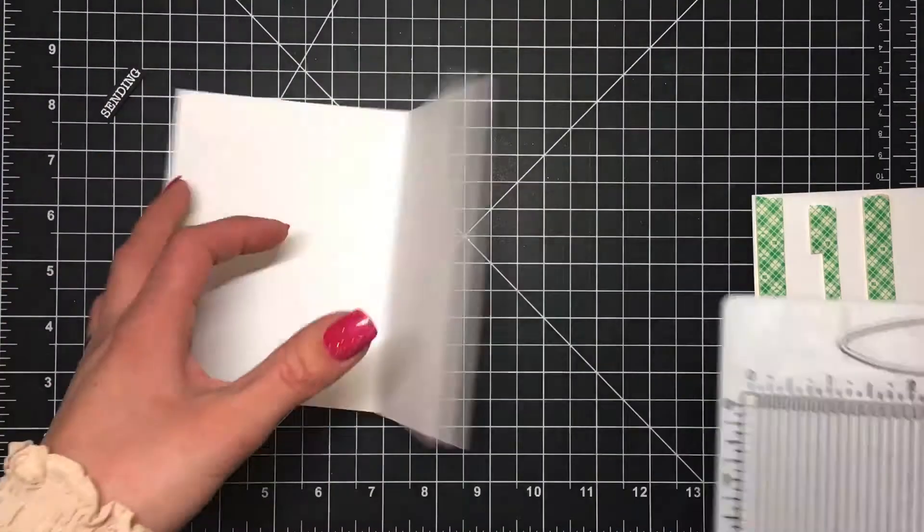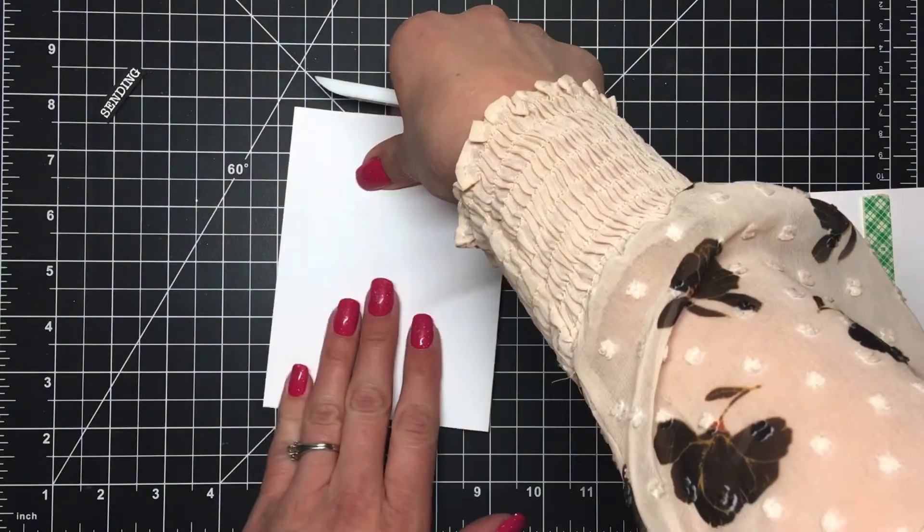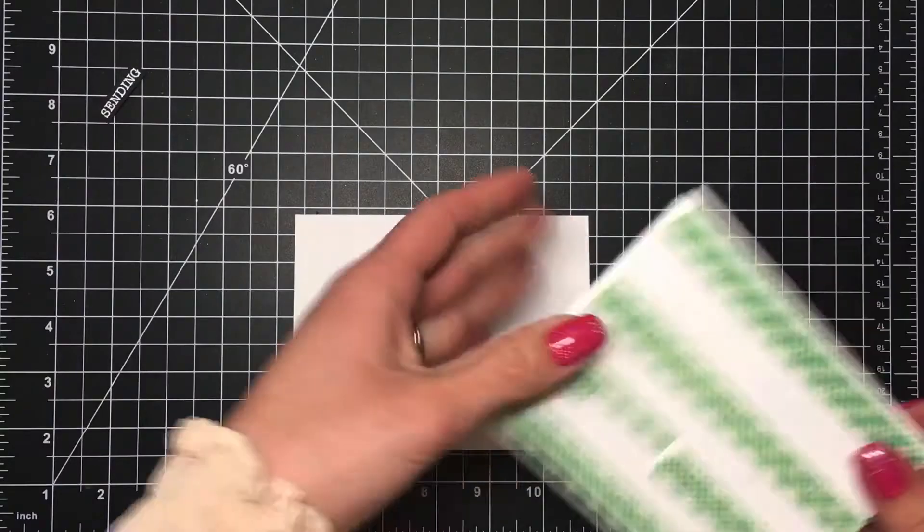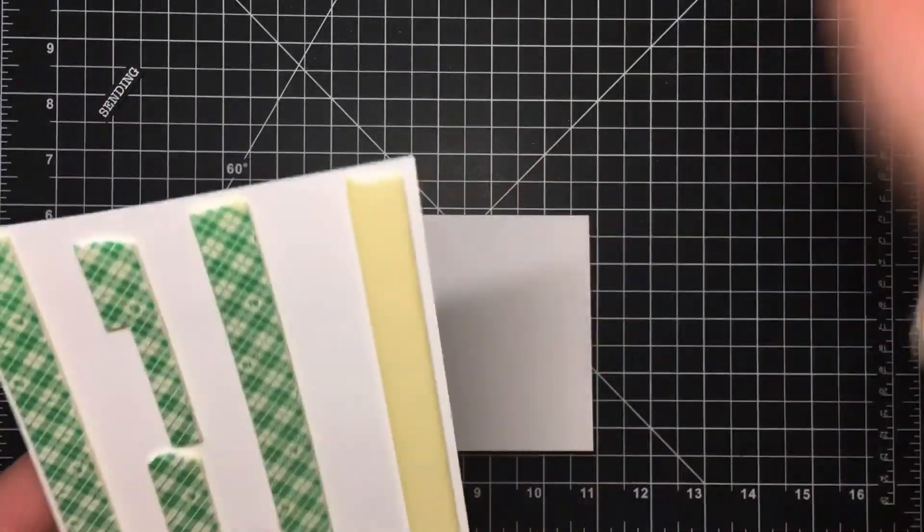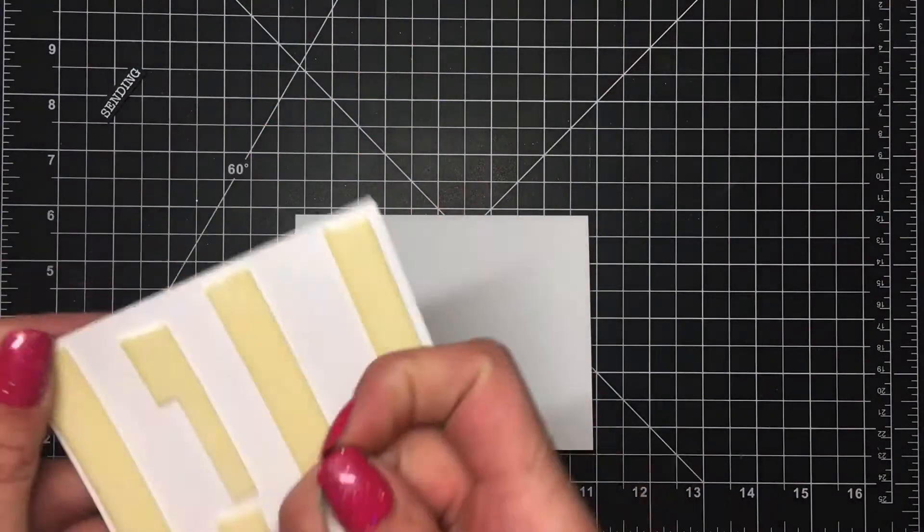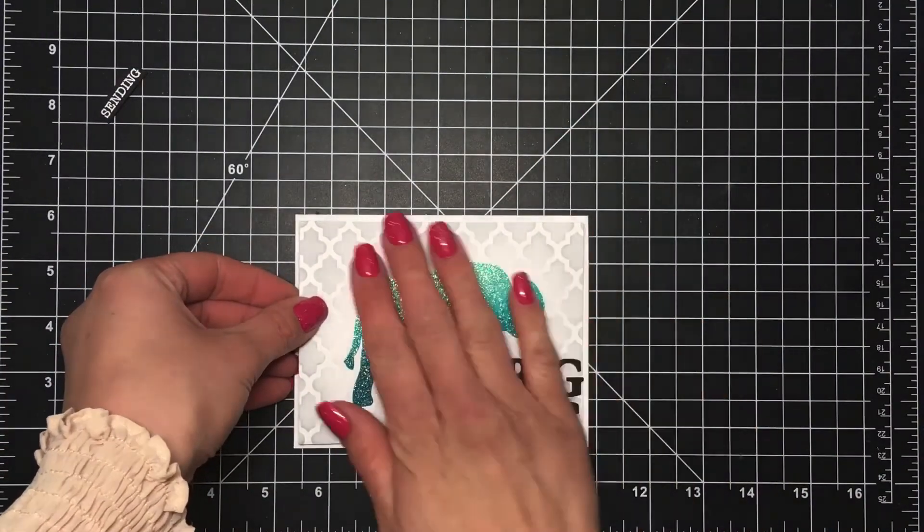I've got my EK tools scoring board and another piece of that Cougar cardstock scored at 4 and a quarter inches for a landscape style top folding note card. I creased that using my Teflon bone folder and I am removing that release paper from that foam tape and then I will adhere that onto the card base.